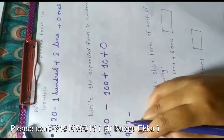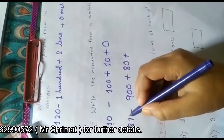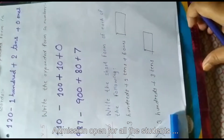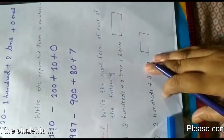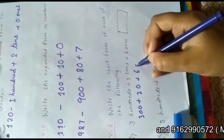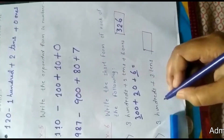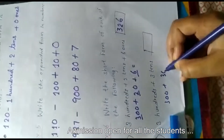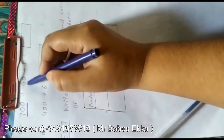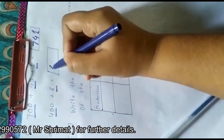Now write the short form of each of the following. 300 plus 2 tens value is 20 plus 6 ones value is 6, so the short form is 326. In the same way, 300 plus 3 tens is 30, so the number is 330. Then 700 plus 40 plus 1, so the short form is 741. And 400 plus 6, the short form is 406.